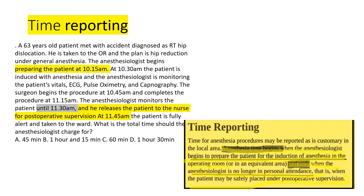Here is a scenario: a 63-year-old patient met with an accident and was diagnosed with a right hip dislocation. He is taken to the operating room for hip reduction under general anesthesia. The anesthesiologist begins preparing the patient at 10:15 a.m., and at 10:30 a.m. the patient is induced with anesthesia. The anesthesiologist monitors the patient's vitals — ECG, pulse oximetry, and capnography. The surgeon begins the procedure at 10:45 a.m. and completes it at 11:15 a.m. The anesthesiologist monitors the patient until 11:30 a.m.